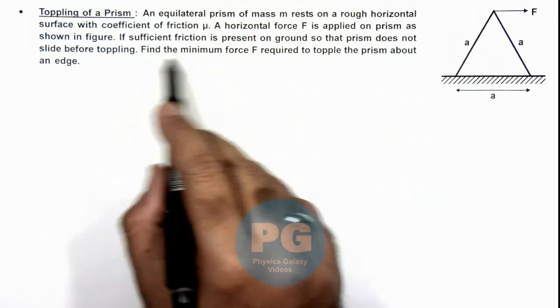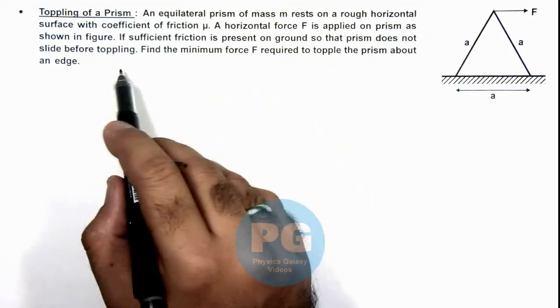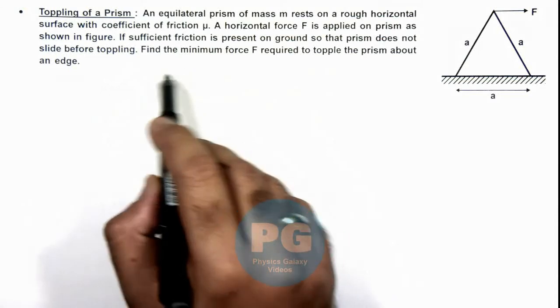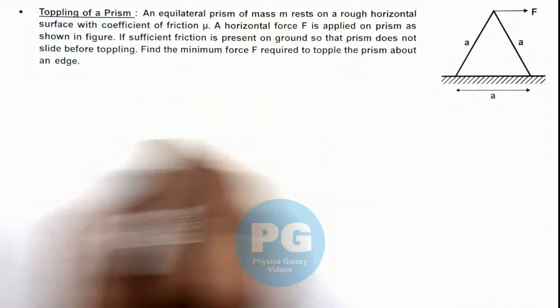It is stated that if sufficient friction is present on the ground so that the prism does not slide before toppling, we are required to find the minimum force F required to topple the prism about an edge.